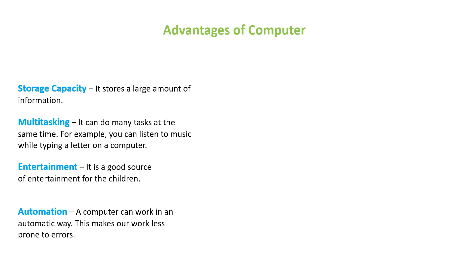Automation: the computer can work in an automatic way, which makes our work less prone to errors. For example, when you are typing and you type a wrong spelling and you have asked the computer to auto-correct, the moment you type the wrong spelling the computer will automatically correct it. You must have noticed this on your cell phones also. That is called automation — when the computer auto-checks or corrects spellings on its own, we will have fewer errors.